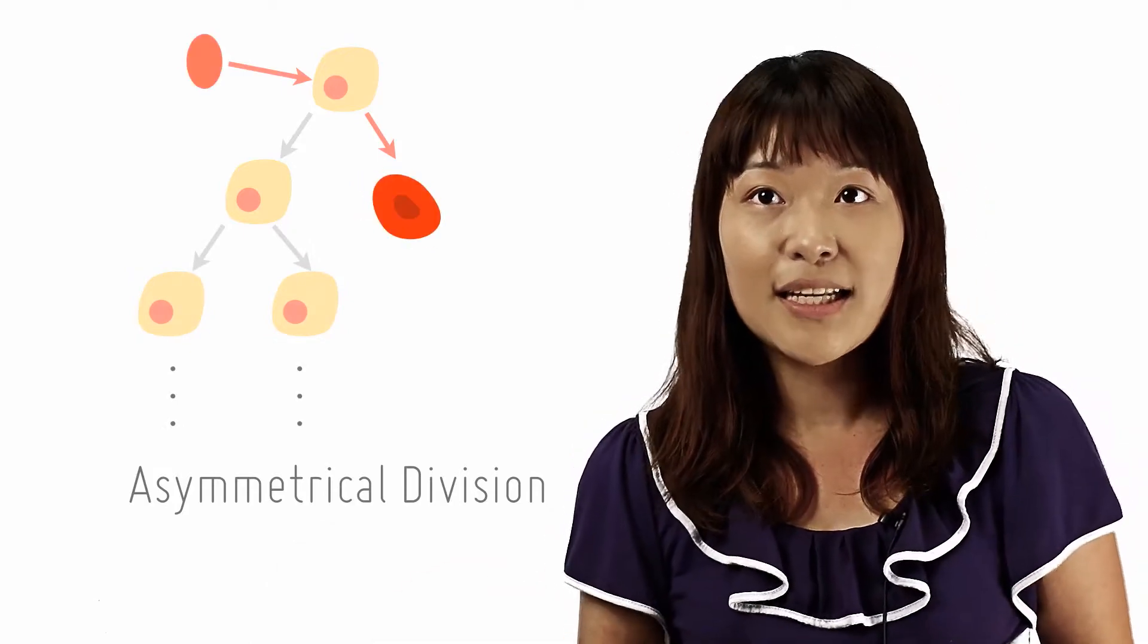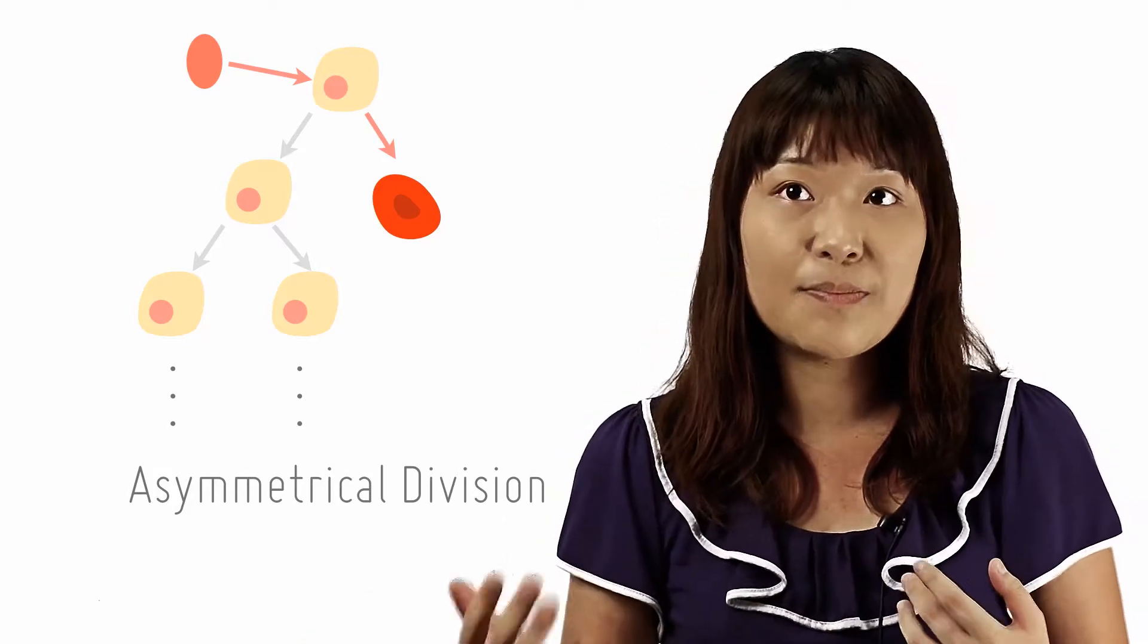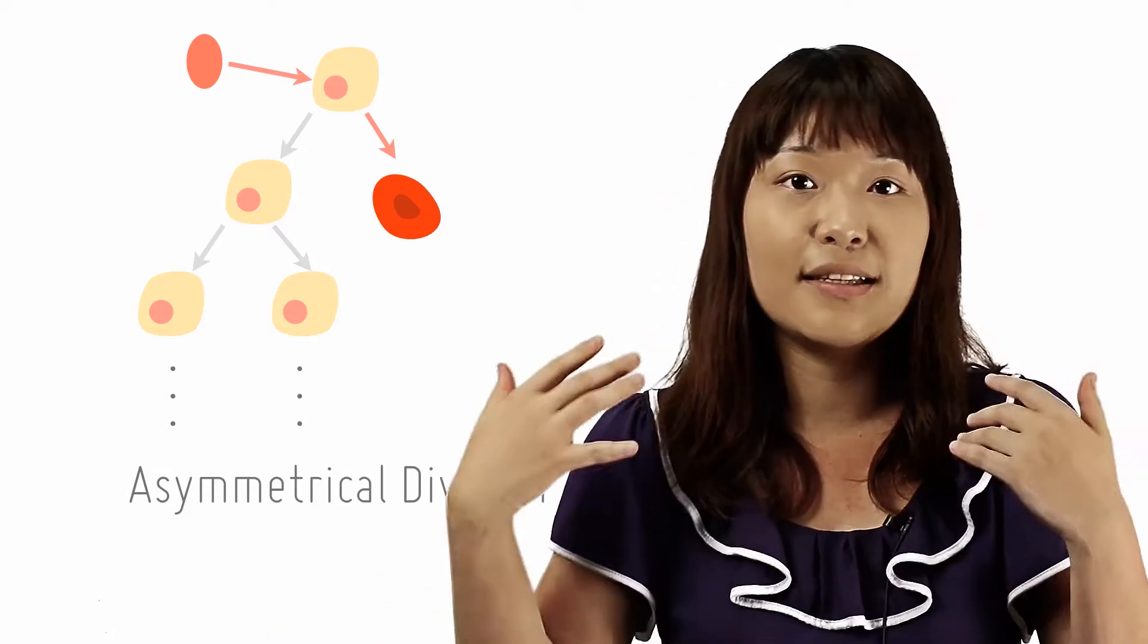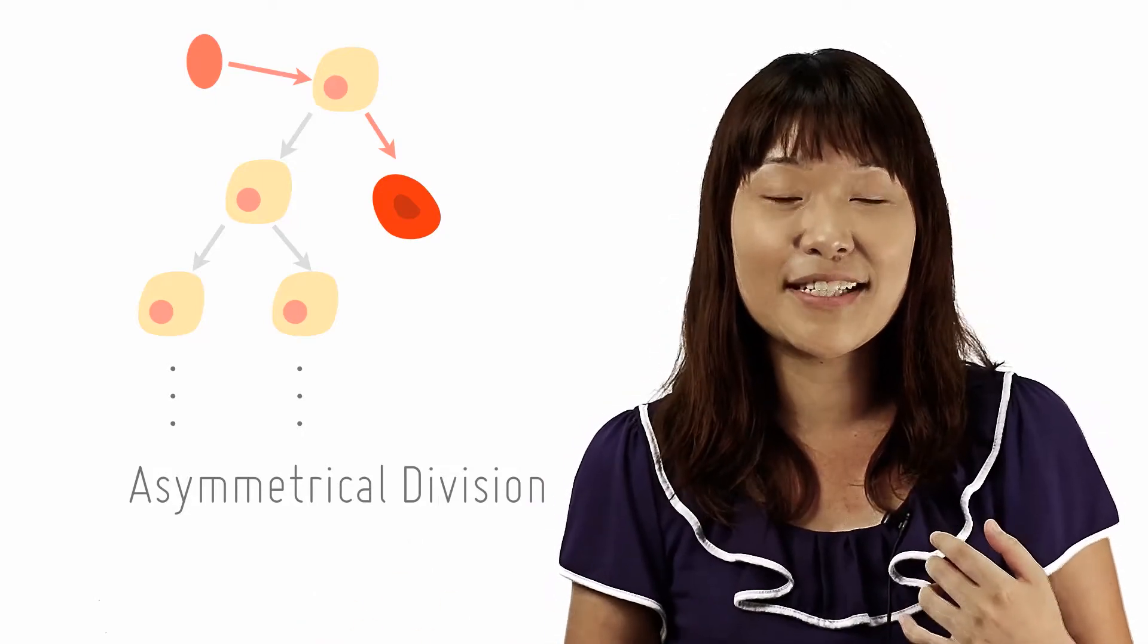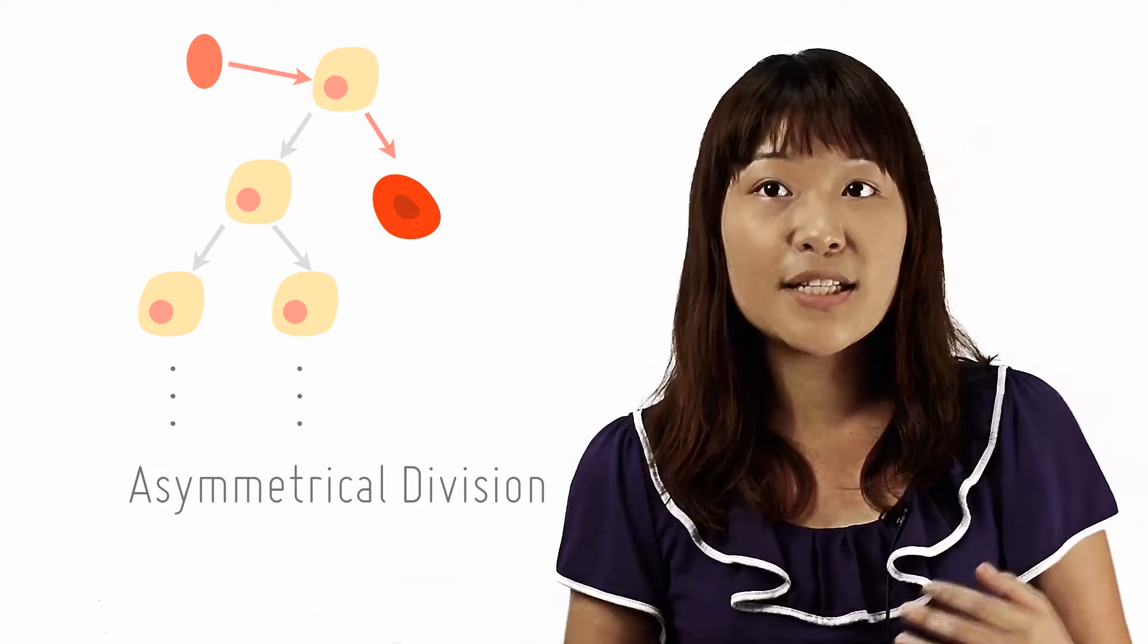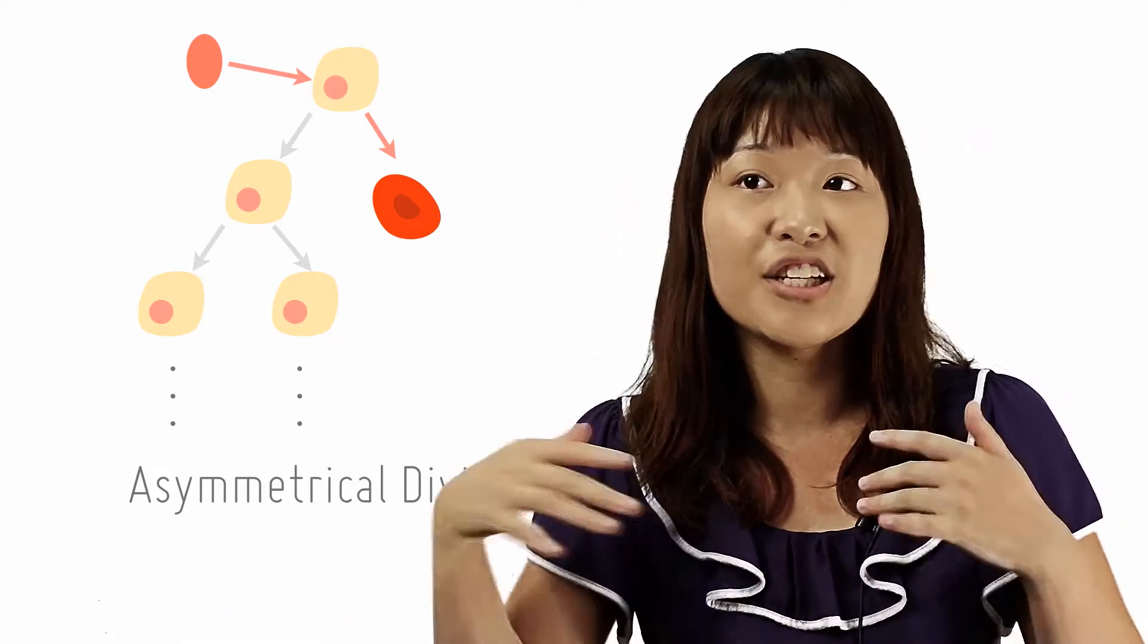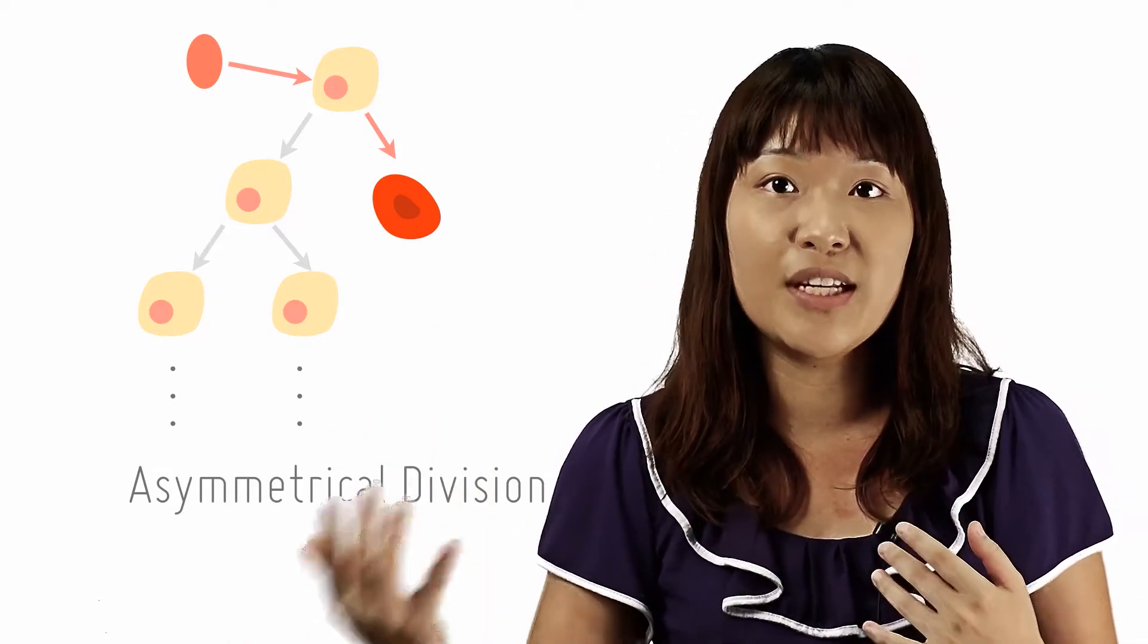As previously mentioned, asymmetrical division gives rise to a daughter stem cell and a specialized or differentiated daughter cell. The presence of the daughter stem cell ensures that there is a constant pool of stem cells and the presence of a specialized or differentiated daughter cell ensures that your population of specialized cells in a specific tissue is renewed.